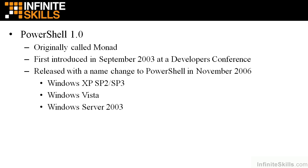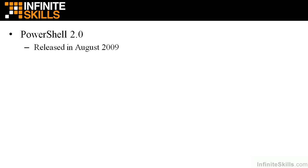This can get a bit confusing for newcomers to PowerShell, and I'll talk about these issues through the next few videos, but based on the operating system you have, you automatically have a particular version of PowerShell. PowerShell 2.0 is probably the one most people have seen — maybe you've noticed that little blue icon, opened it up, and seen the command environment with a blue background. That's PowerShell. PowerShell 2.0 was released in August 2009 as part of Windows 7, and if you're running Windows 7, it's very likely you're looking at PowerShell 2.0.